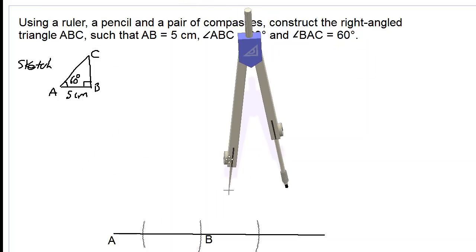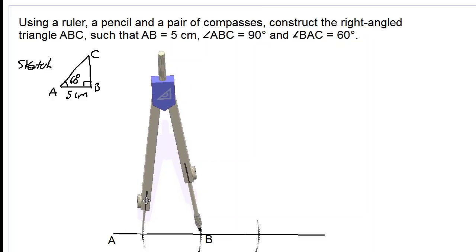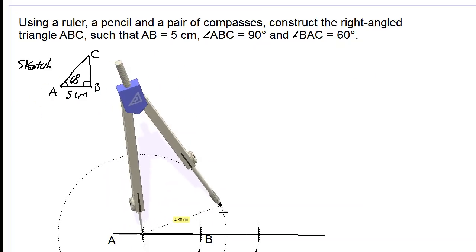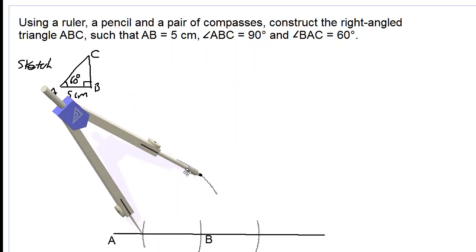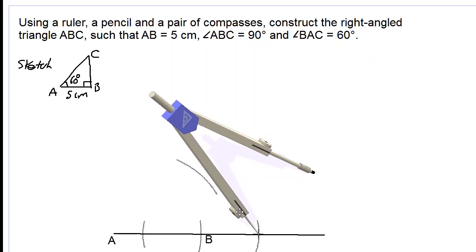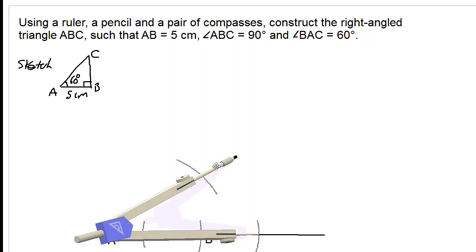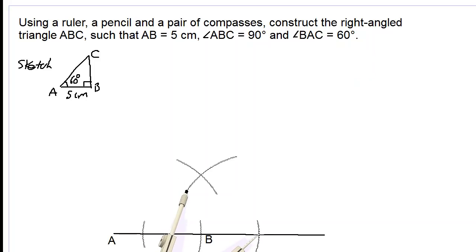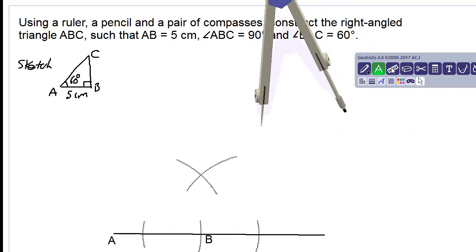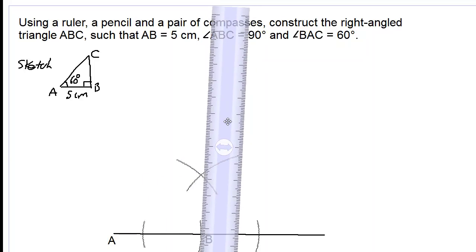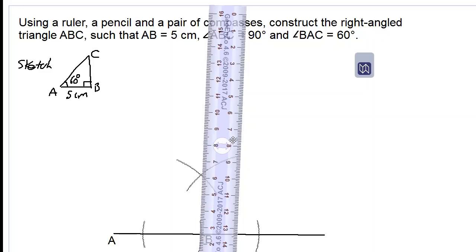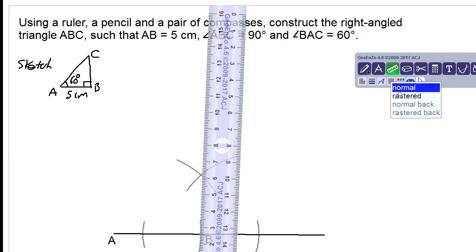We then place the point of the compasses over here, stretching the compass beyond point B, and draw an arc above as if we are going to bisect the line segment. We place the point on the other side without changing the radius of the compass and draw another arc to intersect the first one. We now take our ruler and draw a vertical straight line connecting the arc above point B, using our deeper pencil for this.